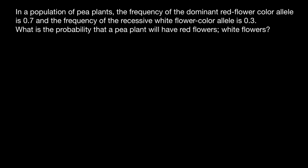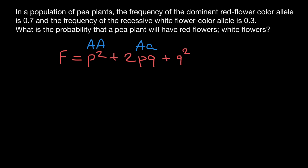Usually when I solve this type of problem, I show you how to use Hardy-Weinberg equilibrium. According to this formula, we have p-squared, which stands for the homozygous dominant genotype, plus 2pq, which stands for the heterozygous genotype, plus q-squared, which stands for the homozygous recessive genotype. When we combine all these frequencies of the three genotypes, we should get 1, which equals 100%.